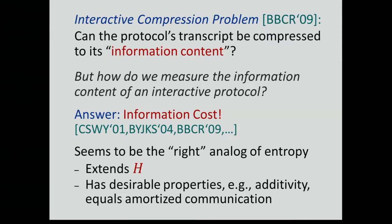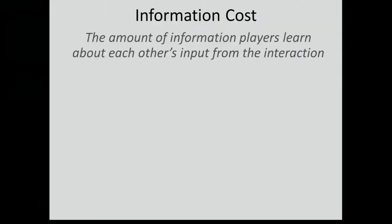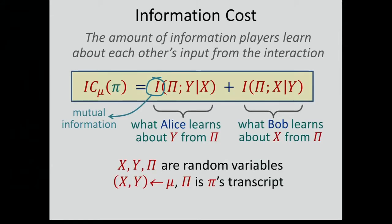Information cost is a cool definition that seemed to be the right analog of entropy. Very roughly, it's the amount of information players learn about each other's input from the interaction — how much information Alice learns about Bob's input, and how much Bob learns about Alice's input. The formula defines the information cost of a protocol pi with respect to a distribution mu, using mutual information I(·;·). X, Y are random variables sampled from mu, and capital-pi is the transcript of the protocol.